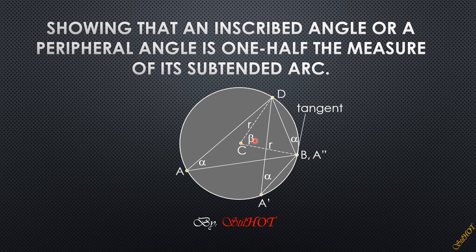In other words, I will show that alpha is one half of beta. I'm going to present three cases. First, we have point A with angle alpha. Second, another position called A prime, which subtends the same arc BD, so its angle is also alpha. Lastly, when point A is at the limiting position coinciding with point B or D, the subtended arc is still defined by chord BD and the tangent line at B, which is perpendicular to the radius.